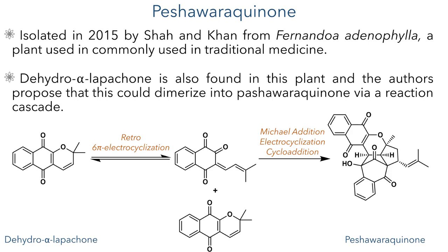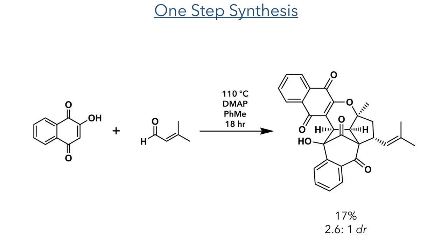A subsequent Michael addition, electrocyclization, and an intramolecular cycloaddition could then form Peshawara quinone. To investigate this hypothesis, they developed a simple and extremely elegant synthesis of this highly complex molecule.